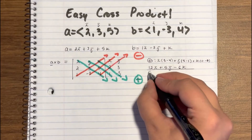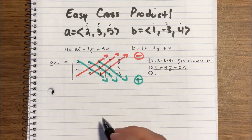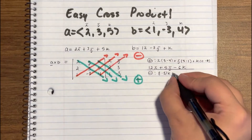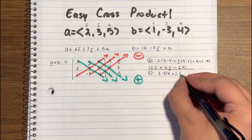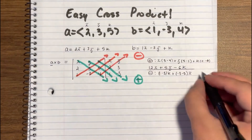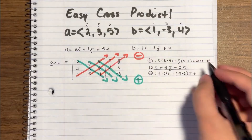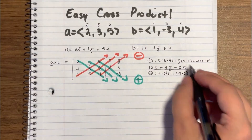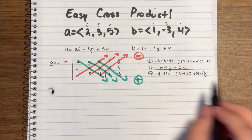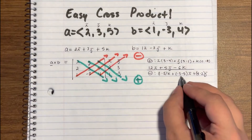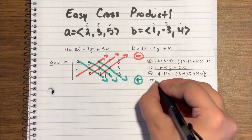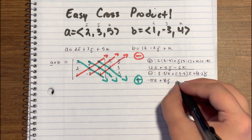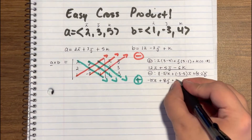Now for our negatives, starting at the bottom: 1 times 3 gives us 3K, then negative 3 times 5 gives us minus 15I, and 4 times 2 gives us 8J. Writing that in I, J, K order: minus 15I plus 8J plus 3K.